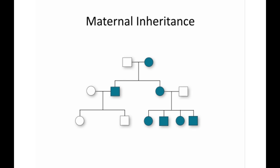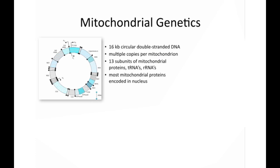Finally, let's turn attention to maternal inheritance. This would be a prototypical pedigree where an affected female has transmitted the trait to all of her offspring, and males transmit to none. Maternal inheritance is a characteristic due to the presence of the mitochondrial genome. The mitochondrial genome consists of a 16,500 base pair circular double-stranded DNA molecule present in multiple copies per mitochondrion, encoding 13 subunits of mitochondrial proteins and a full set of transfer and ribosomal RNAs. The majority of mitochondrial proteins are encoded in the nucleus, not in the mitochondria. The reason for maternal inheritance is that the sperm mitochondria, which are present proximal to the head attached to the tail, are shed at the time of fertilization, so all of the mitochondria are maternally derived.